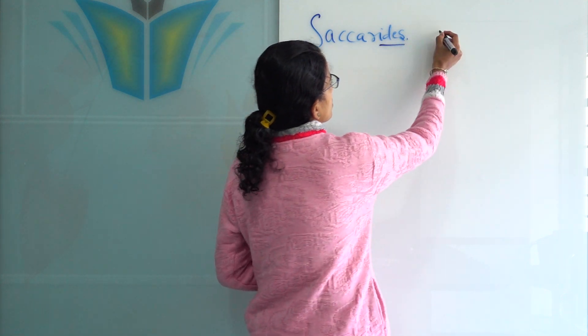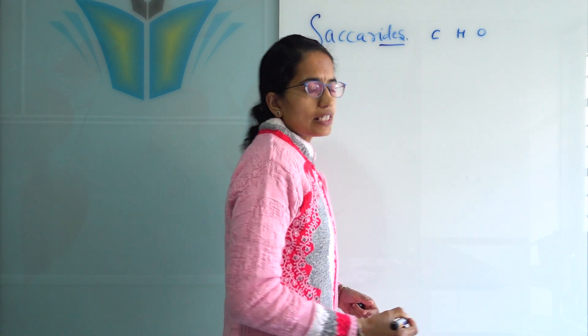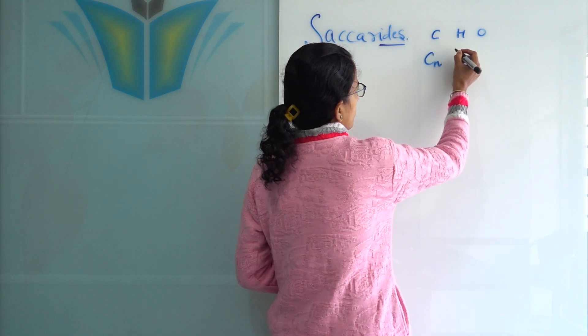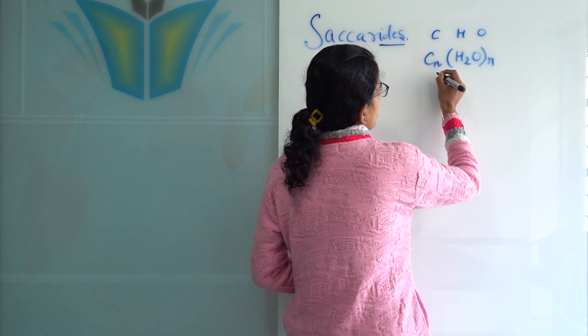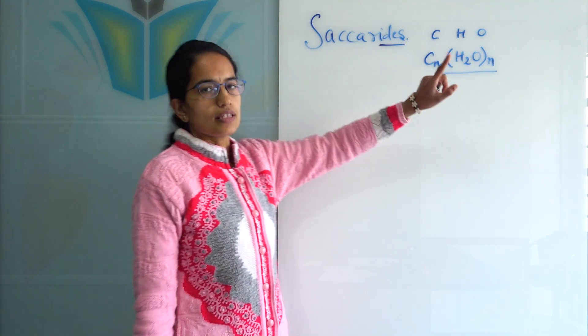Now, saccharides are units of carbon, hydrogen and oxygen. To represent it simply, I can say there are certain molecules of carbon along with certain molecules of hydrogen and oxygen. So, this would be the basic formula for saccharide where n is the number of unit.